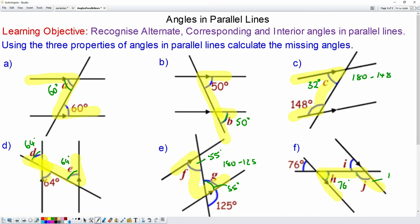So j will be 180 take away 76, j will be 104. And finally, i and h are alternate, so they will be equal. You know this works because i and j are on a straight line and they both add up to 180.